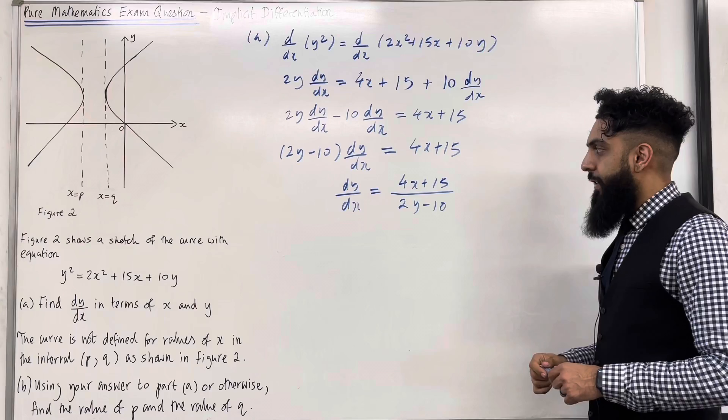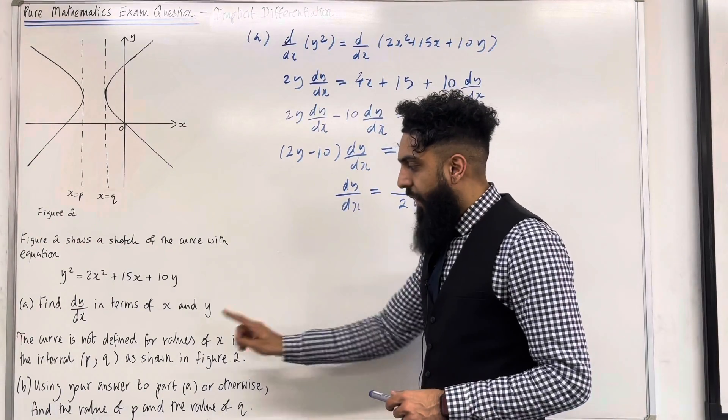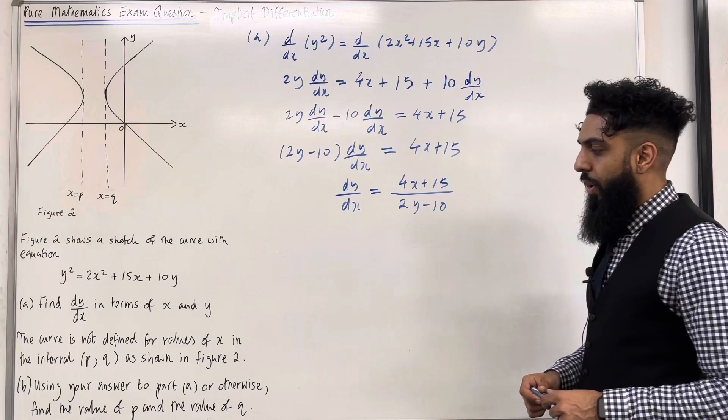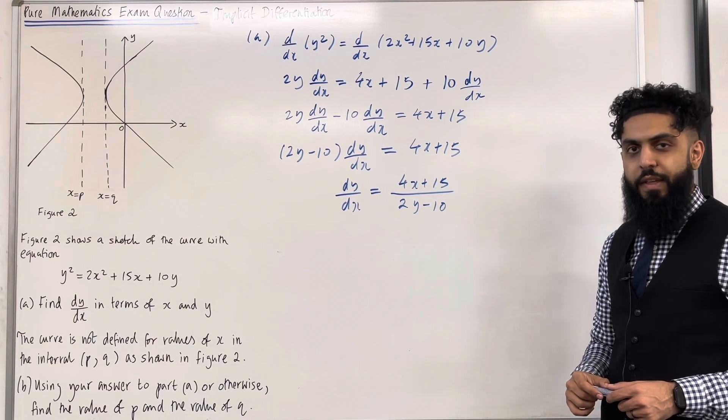using your answer to part A, which is dy over dx equal 4x plus 15 over 2y minus 10, or otherwise, find the value of p and the value of q. Please pause the video. Have a go at part B once you've got your complete solution. Then play the video.